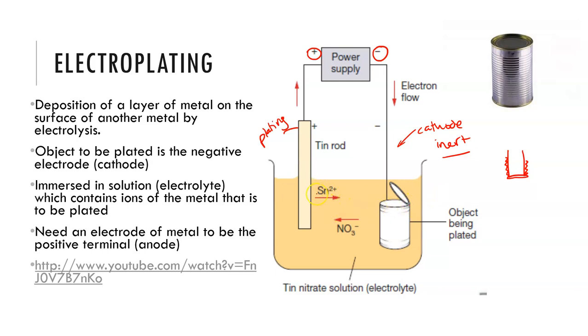So we have a plating metal at the anode. The electrolyte needs to contain the ions of the metal that we want to reduce and then Sn2+ here is going to be reduced to Sn solid at the cathode.